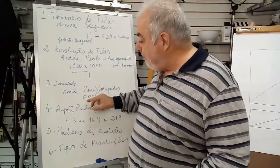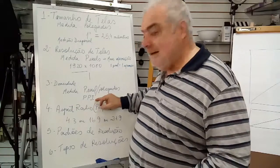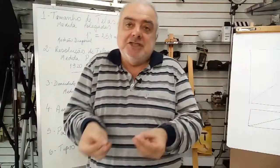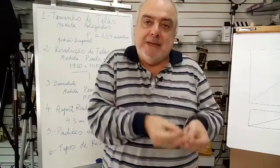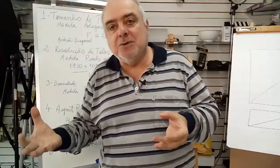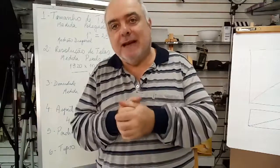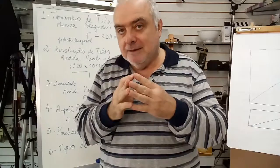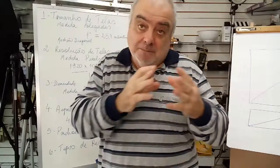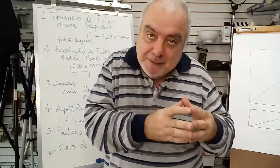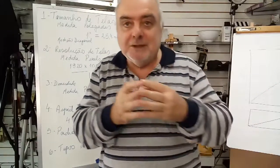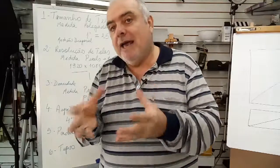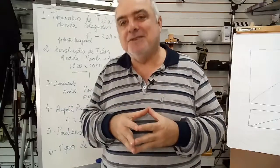So, the PPI of a screen represents the quantity of pixels per cm². You see, therefore, the more pixels per cm², the higher the resolution.